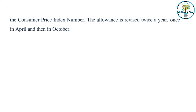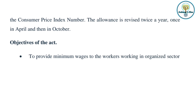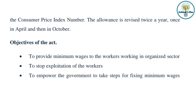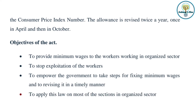Let us talk about some of the objectives of the Act. First, to provide minimum wages to workers working in the organized sector. Second, to stop exploitation of the workers. Third, to empower the government to take steps for fixing minimum wages and revising them in a timely manner. Fourth, to apply this law on most of the sections in the organized sector.